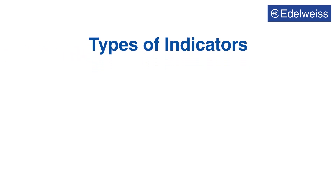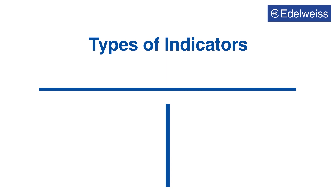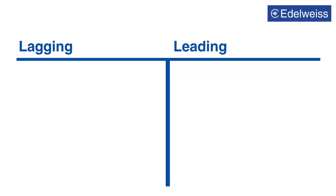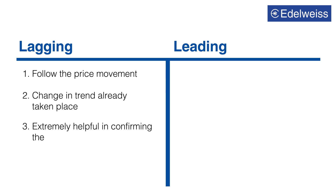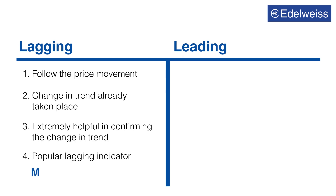Indicators are of two types: lagging and leading. Lagging indicators follow the price movement or change in trend already taking place. They are extremely helpful in confirming the change in trend. One of the most popular lagging indicators is moving average.